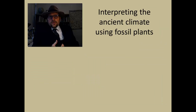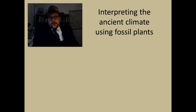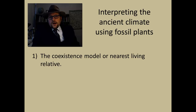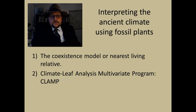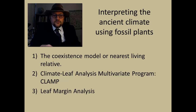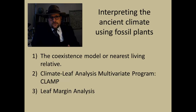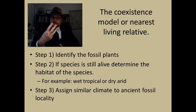Today in this lecture we will examine three ways to use fossil plants to interpret ancient climates in the geological past. The first technique is what Koplin first proposed, using what is called the Coexistence Model, or the Nearest Living Relative Model. In the last 50 years more sophisticated models have been developed: the Climate Leaf Analysis Multivariant Program CLAMP, and the more modern Leaf Margin Analysis. Let's take a look at the earliest technique — the Coexistence Model first. The Coexistence Model has three steps.